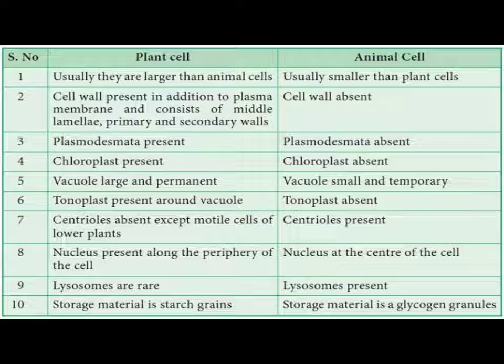Chloroplast is present in plant cells and absent in animal cells. The vacuole is very large and prominent in the plant cell — for me, plant cell and vacuole go hand in hand. I cannot imagine a plant cell without a vacuole. But if a vacuole is present in an animal cell, it is small and temporary.